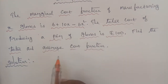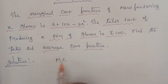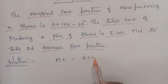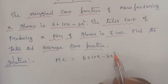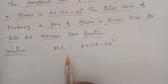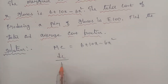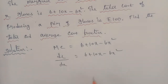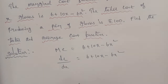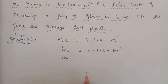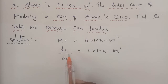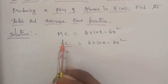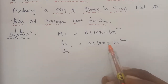So marginal cost is equal to dC/dx, which equals 6 plus 10x minus 6x square. Separating the variables: the C term and dC on one side, the x term and dx on the other side. Arranging equation 1: dC equals (6 plus 10x minus 6x square) dx.